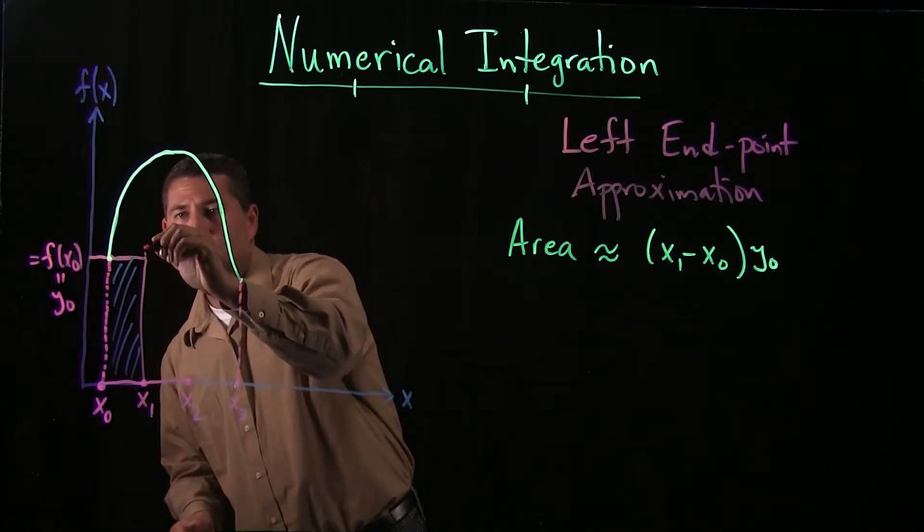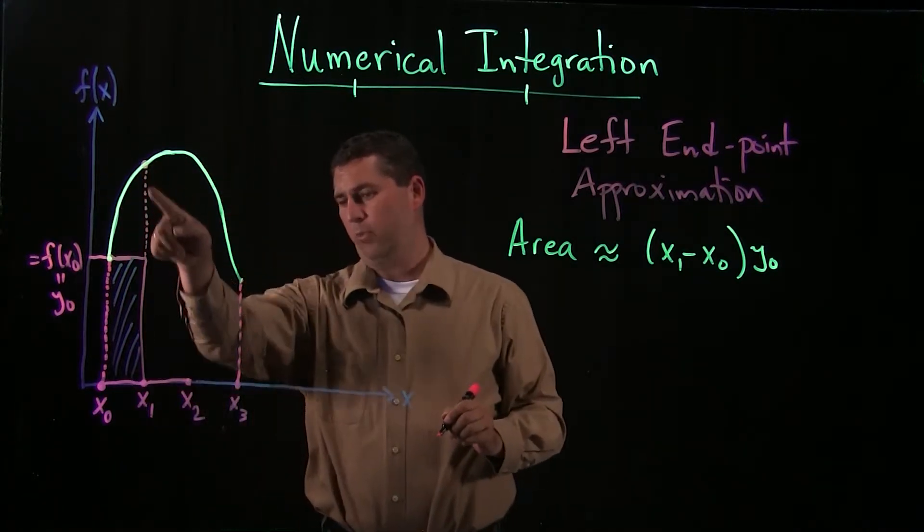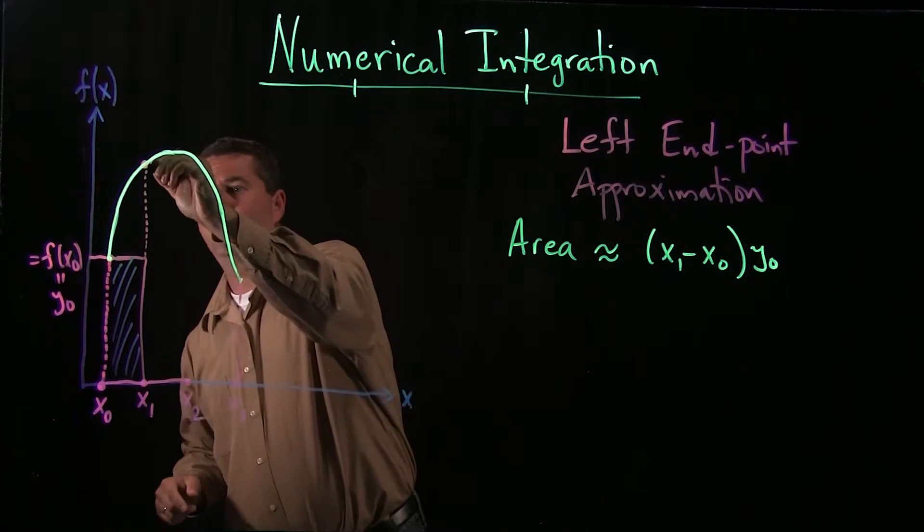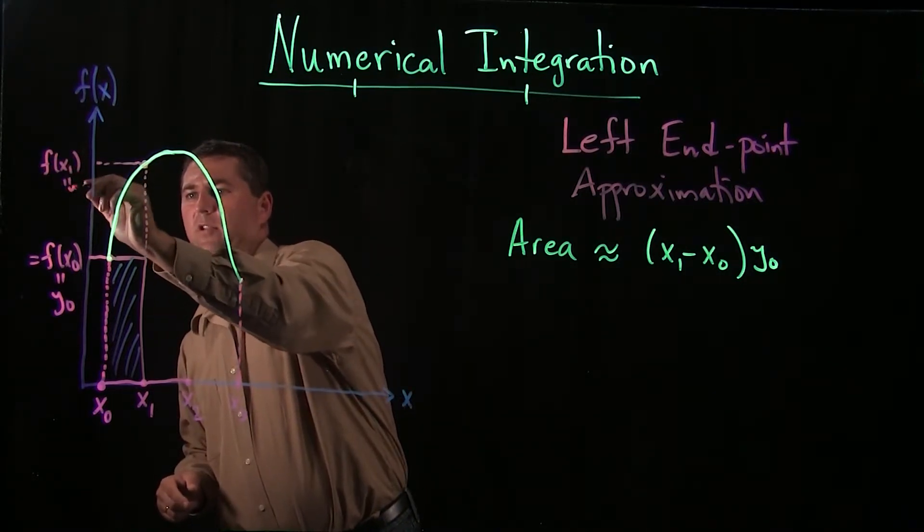And the interval will go from x1 to x2. So I say, okay, where does f output at x1? Well, it's this height up here.